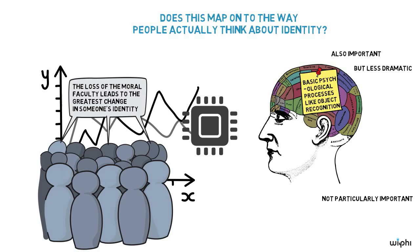And mere physical changes, such as installing the microchip that perfectly preserves mental function, leads to the lowest degree of perceived identity change. When people consider what makes someone who they are, they place central importance on moral capacity.